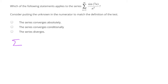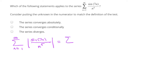We'll start by looking at absolute convergence by taking the absolute value of the terms of our series. Since n to the fifth is always going to be positive whenever n is positive, we're really just taking the absolute value of the sine.